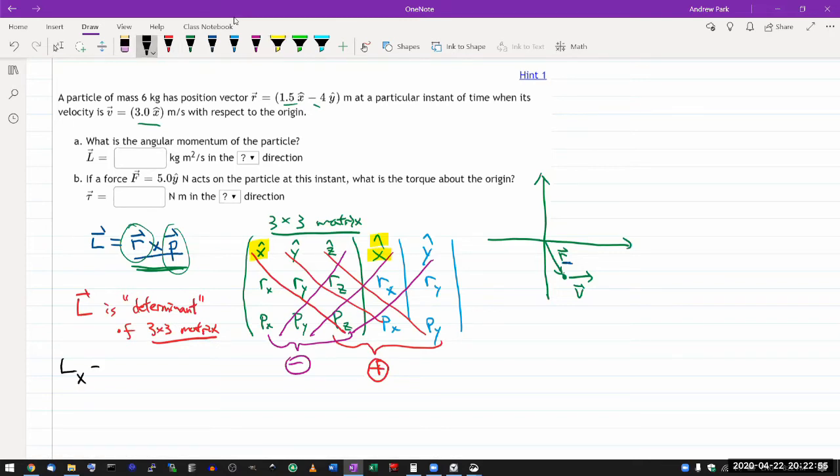L of x is going to come out of these two combinations, ry pz, ry pz, minus this combination here, rz py, rz py.